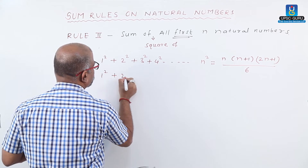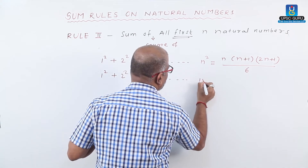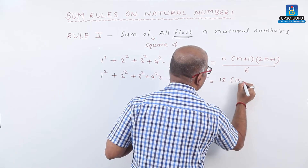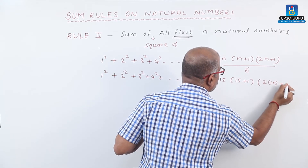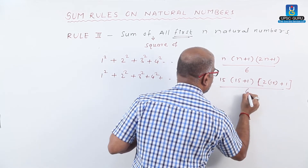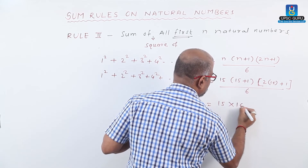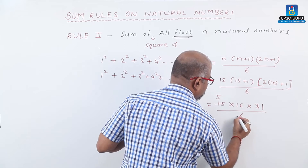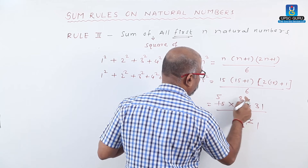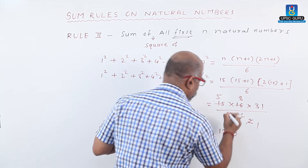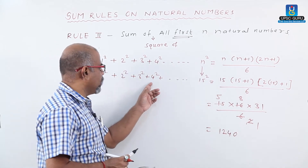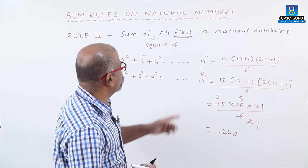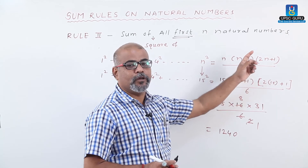For example, find 1 squared plus 2 squared plus 3 squared plus 4 squared up to 15 squared. Here n equals 15. Substituting: 15 into 15 plus 1 into 2 times 15 plus 1, divided by 6. That gives 15 into 16 into 31, divided by 6. Working through the arithmetic: 5 into 8 is 40, and 40 into 31 gives 1240. The formula for the sum of squares of the first n natural numbers is n(n+1)(2n+1) divided by 6.